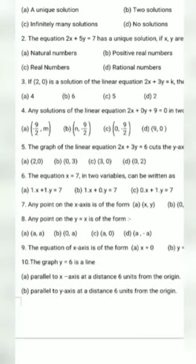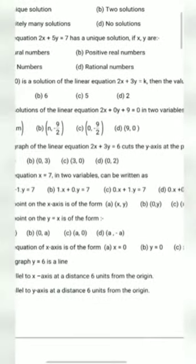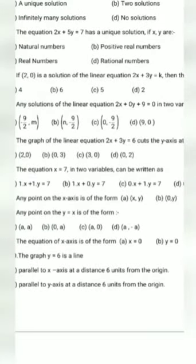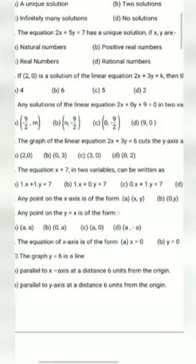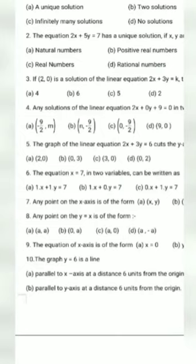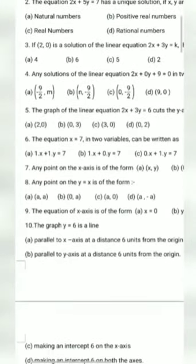Any solution of linear equation 2x plus 0y plus 9 equal to 0 in two variables is of the form — here y equal to 0, and if you solve it, x equal to minus 9 by 2. Looking at the 4 options, option A has x equal to minus 9 by 2, so option A will be correct.